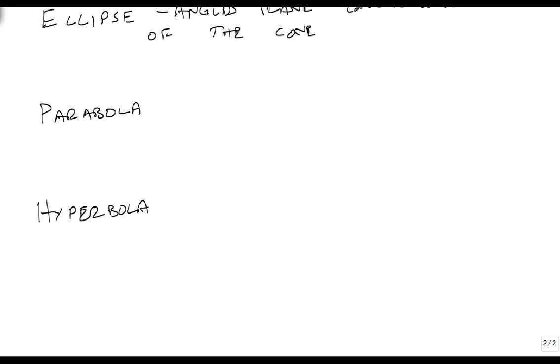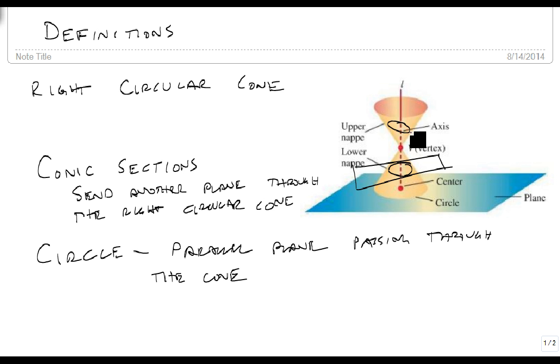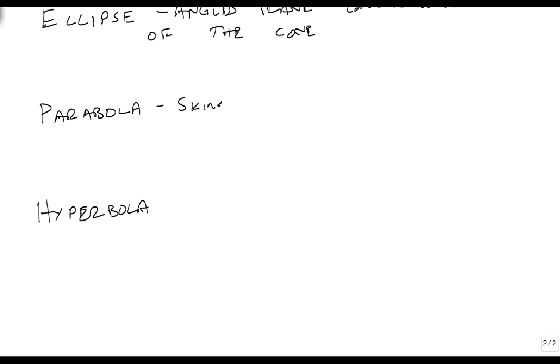A parabola is what happens when we just skim along part of the cone. We don't get all of it, just skim along part of it. Again, we'll show a picture of this. This just skims the cone.